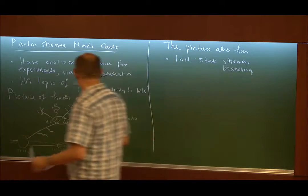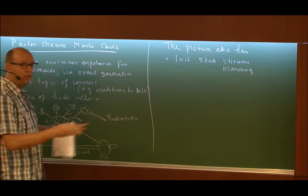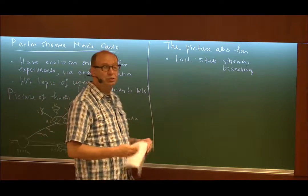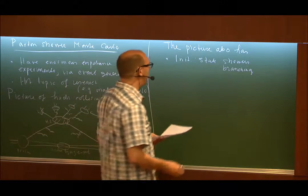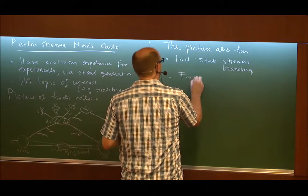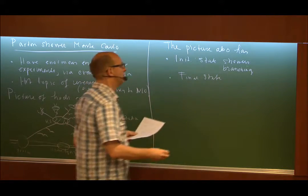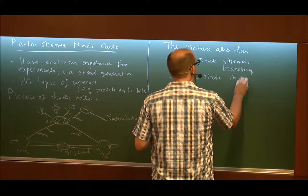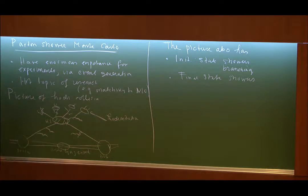And we see the same thing here in the final state. So once the partons are produced, they can start radiating off partons, which in turn can radiate off more partons. We have a whole shower developing, a whole avalanche, and that is then the final state shower. So this is more or less the stages in which the Monte Carlo program is also built up. You find these phases all built in.